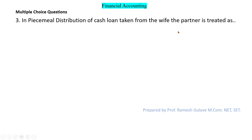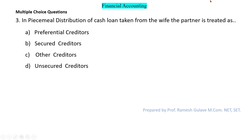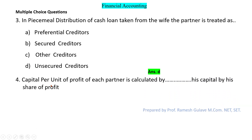The next question says: in piecemeal distribution of cash, a loan taken from the wife of a partner is treated as unsecured creditors. So option D is the right answer.